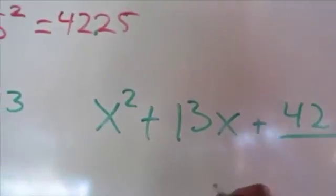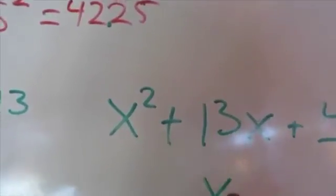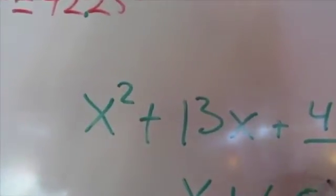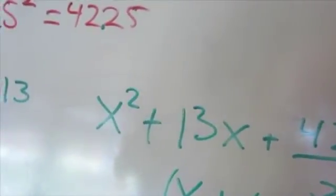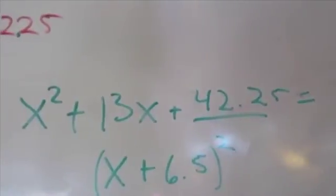And then it'll make sense that this is going to be x plus 6.5 squared. But these are the same. That makes it so much easier. Yeah. Isn't that simple?